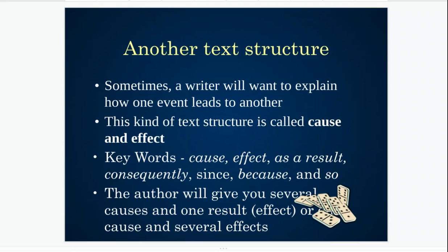Sometimes a writer will want to explain how one event can lead to another event. So this kind of text structure is going to be called cause and effect. You will know it's cause and effect because you will probably see words like cause or effect in the passage. Sometimes you'll see phrases like as a result or consequently, since, because, and so. These are signals that there is a cause and effect relationship. The author could give me several things that caused one effect, or sometimes it might give me several effects and just tell me the one cause.